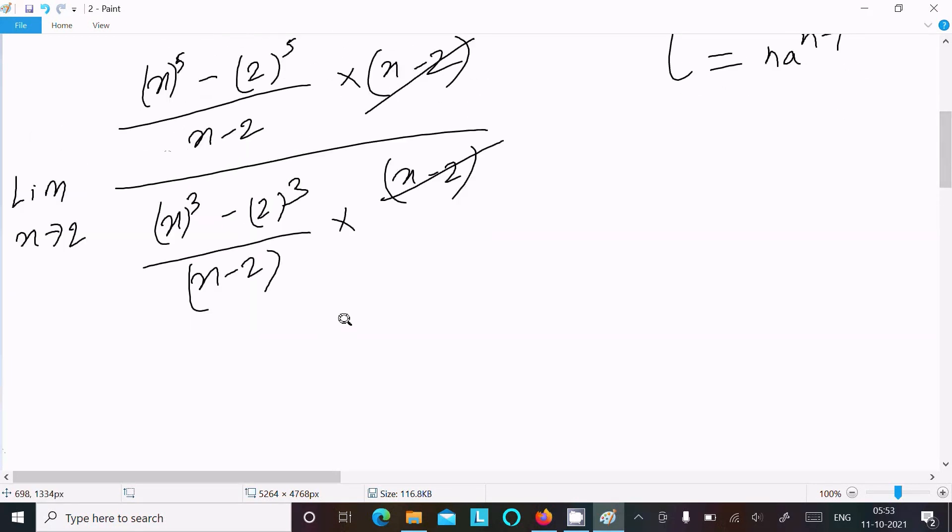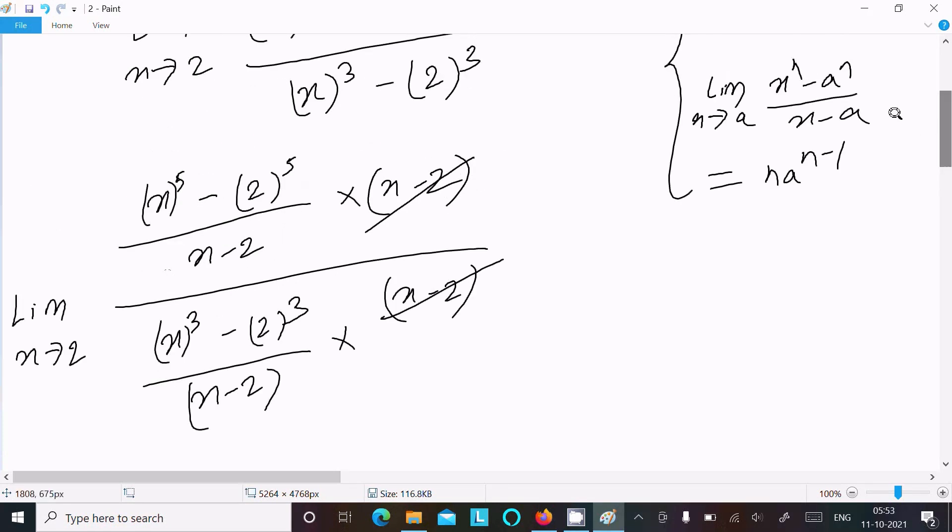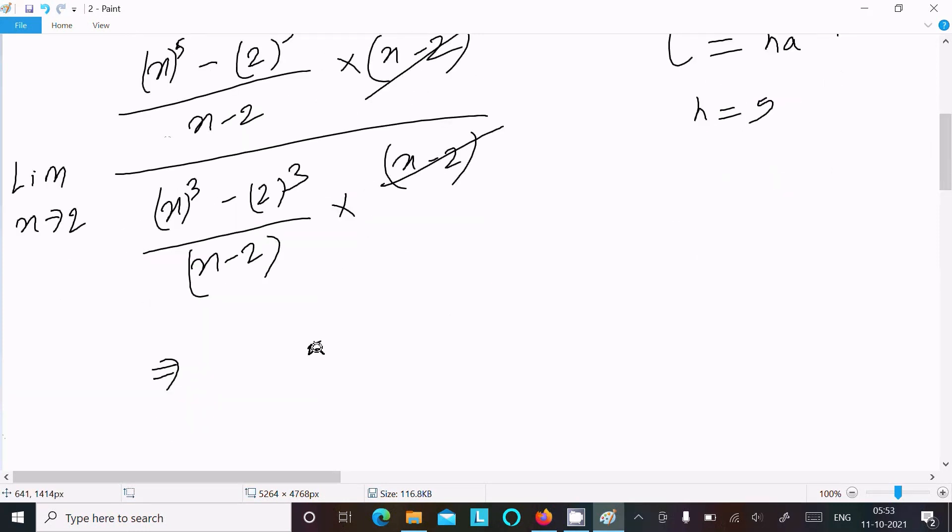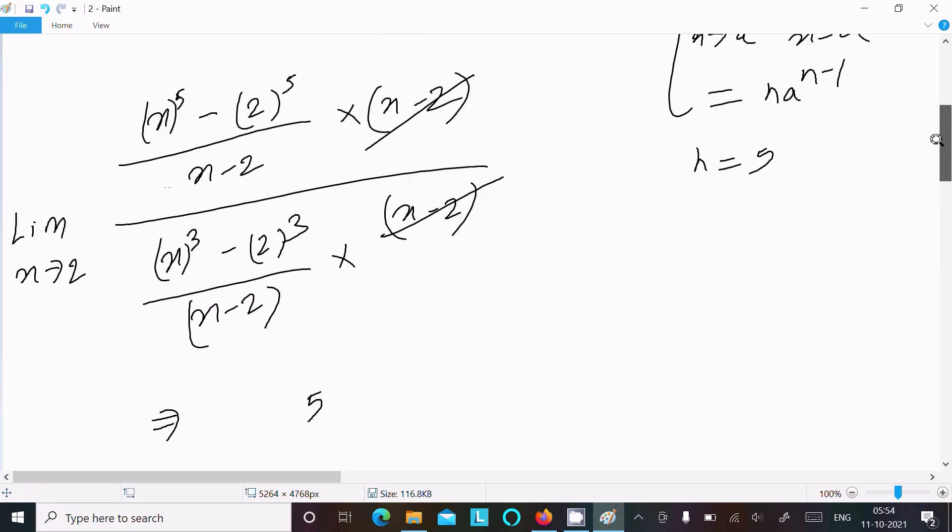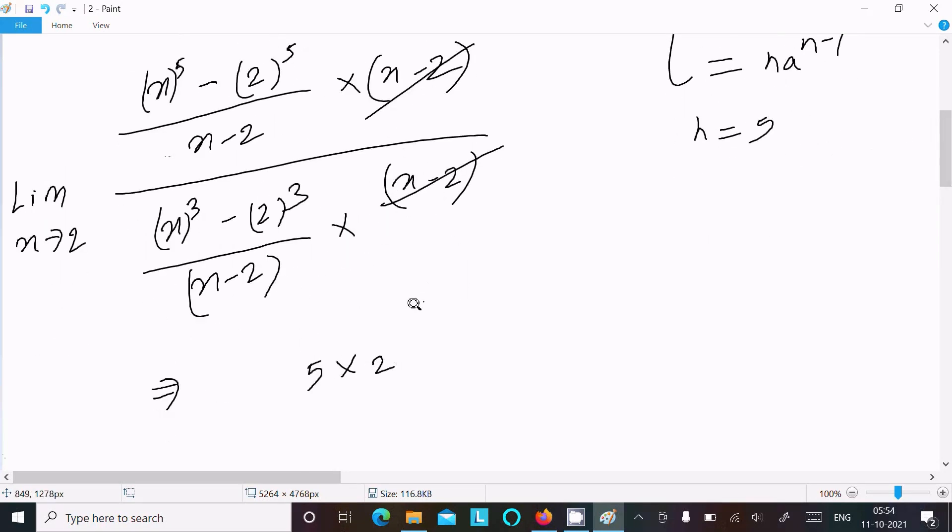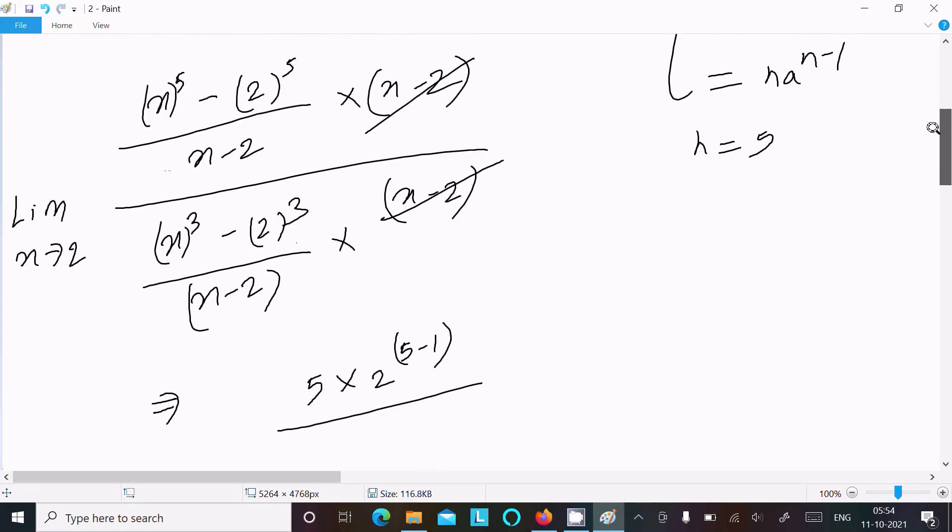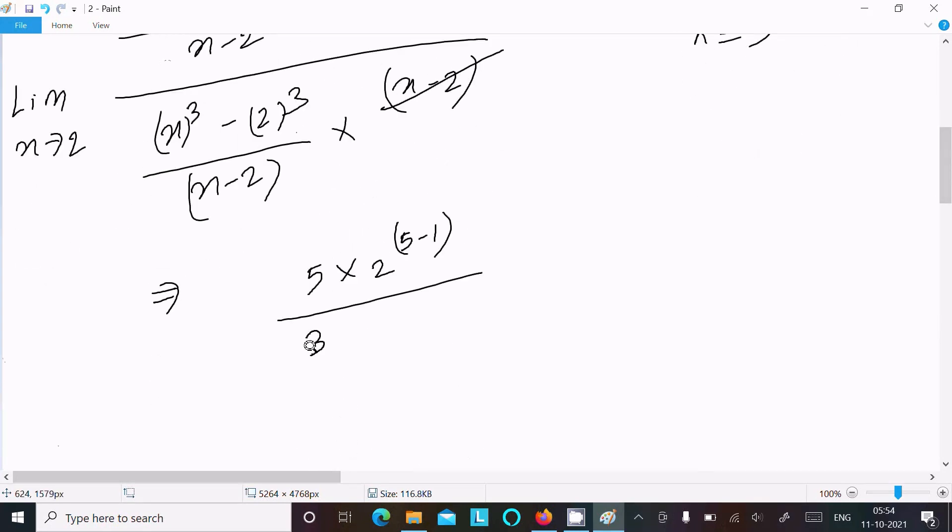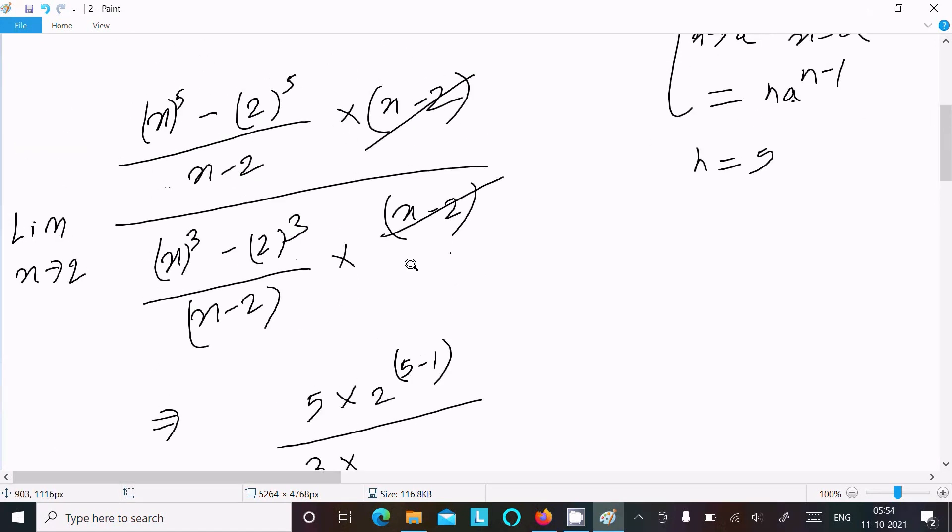Now thereafter writing here, so this we can write x^5 minus 2^5, so n is equal to 5. So this we can write 5, and a is 2, so 5 times 2^(n-1), 5 minus 1, 5 minus 1. And for this one, n is 3, thereafter a is 2, 3 times 2^(3-1).